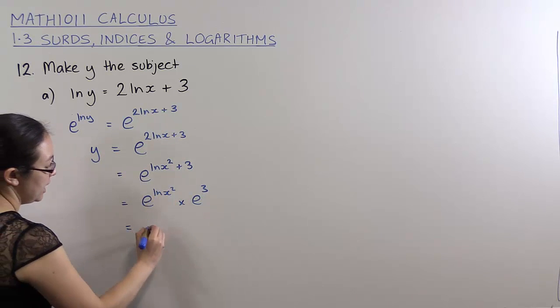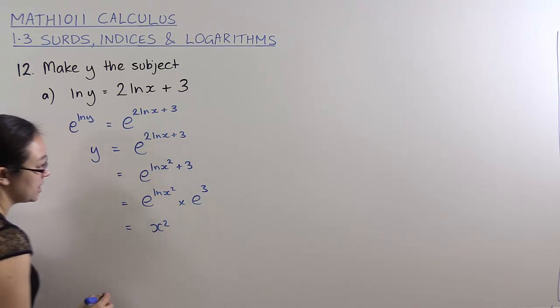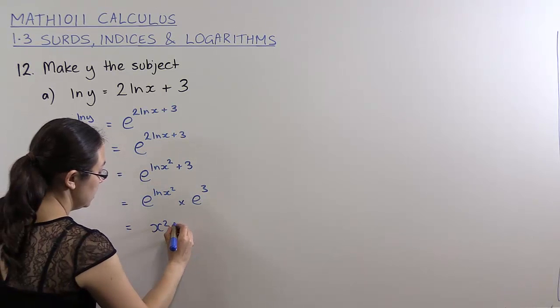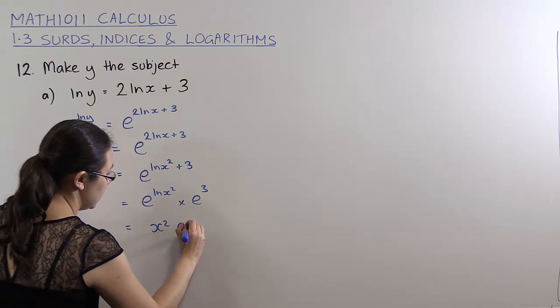Now e to the log base e of x squared is just x squared. Again, exponentials and logarithms are inverses of each other. So if I take x squared and log it, then take the exponential, I'm just going to get back x squared. So I will get x squared times e cubed.